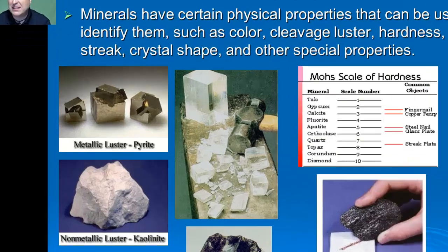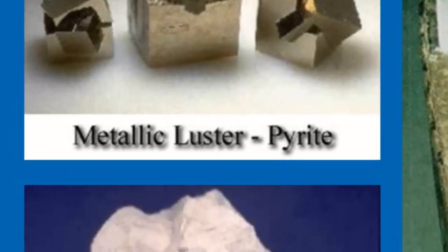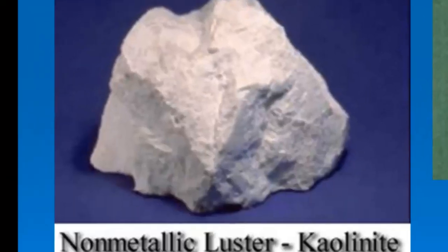We could examine its luster — what the surface looks like in the light. Some minerals have a metallic luster like fool's gold or pyrite, while others may have a non-metallic luster like calcite.